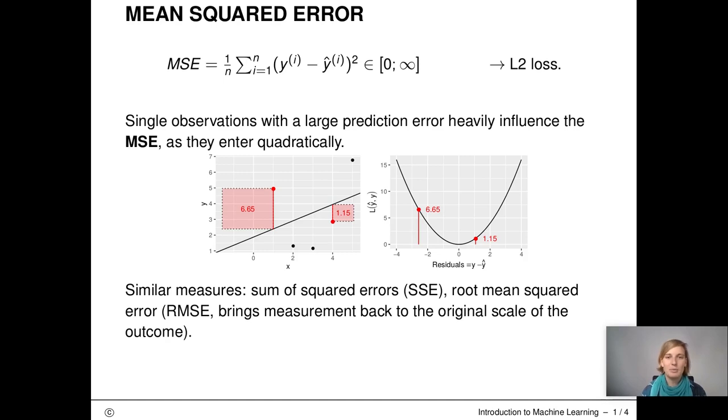The mean squared error is probably the most widely known performance measure. It simply takes the squared distance between the predicted value and the actual value for each observation and sums them up. The mean squared error or MSE is equivalent to the L2 loss. There are simply two different words for the same thing. Usually we call it L2 loss if we talk about the inner loss and we call it MSE if we talk about the outer loss.